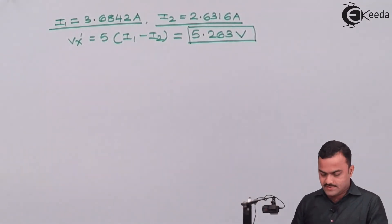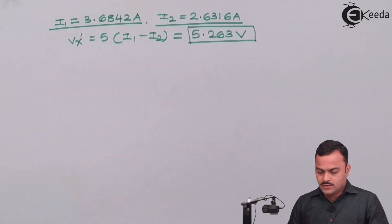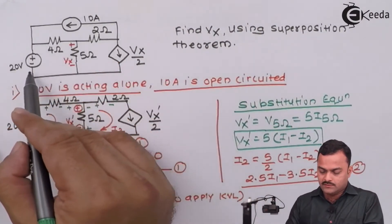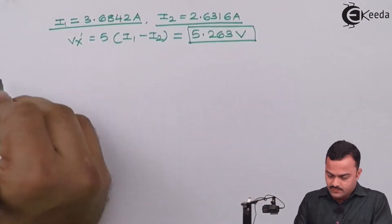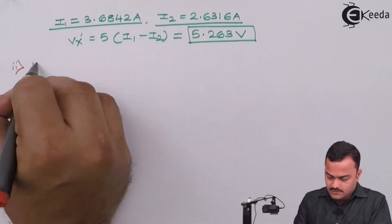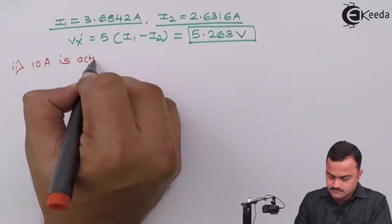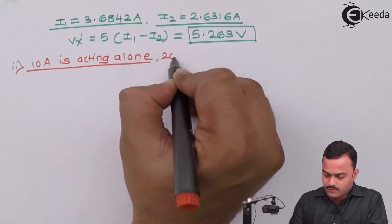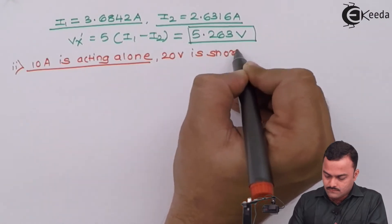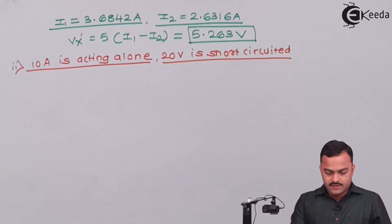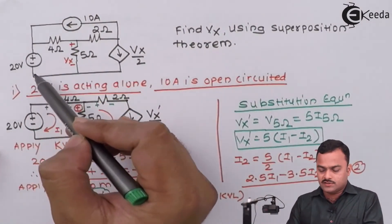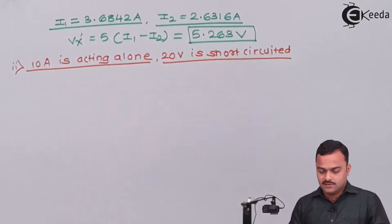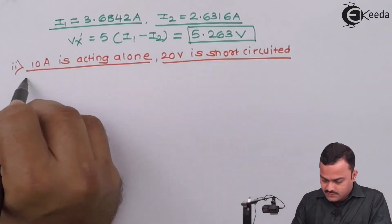We have completed the analysis with 20 volts acting alone. Now we consider a circuit where 10 amperes is acting alone. We need to short-circuit the voltage source present in the circuit. For the second analysis, 20 volts being a voltage source will be short-circuited — replaced with a plain wire — and the dependent current source remains. The resultant circuit is now drawn.